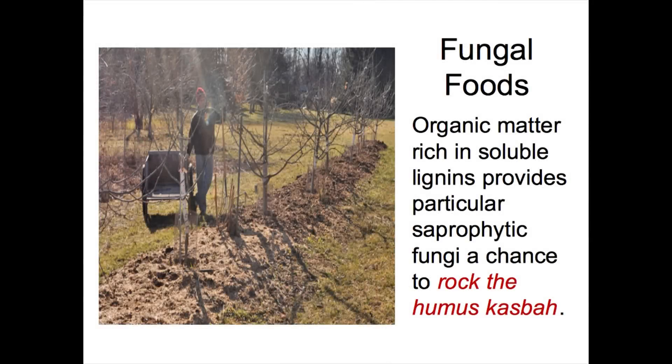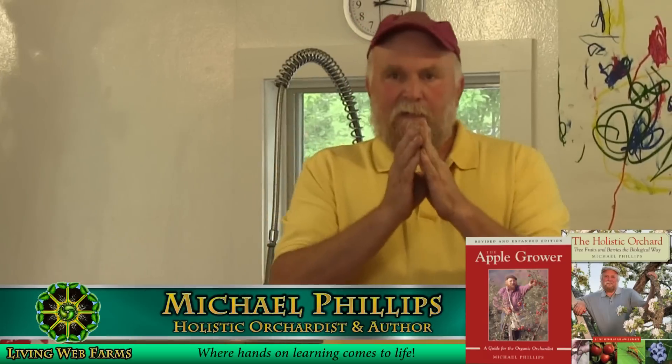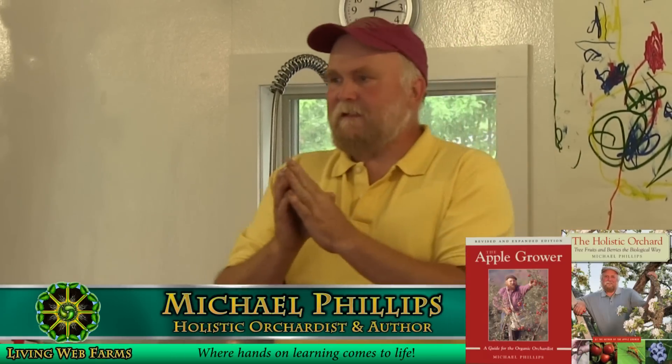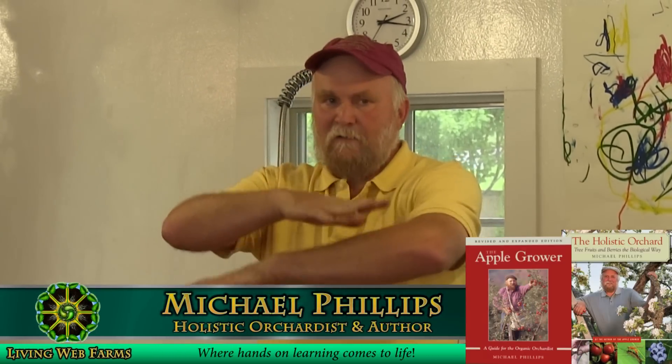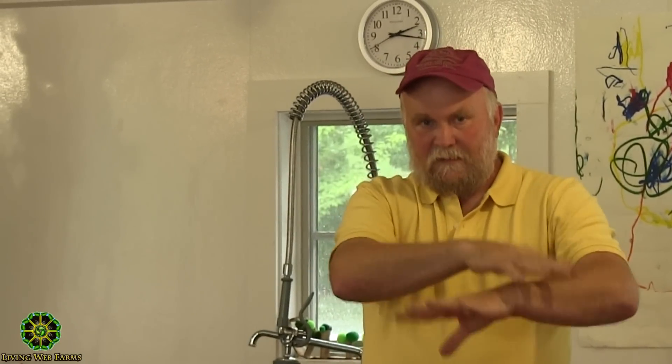To get that forest edge soil ecosystem, we have to provide fungal foods. When thinking about fungal foods, take your mind to the edge of the forest. Goldenrod grows, raspberry canes grow, they fall over and decompose. Plant matter that grows up, falls over, and decomposes — that's good.